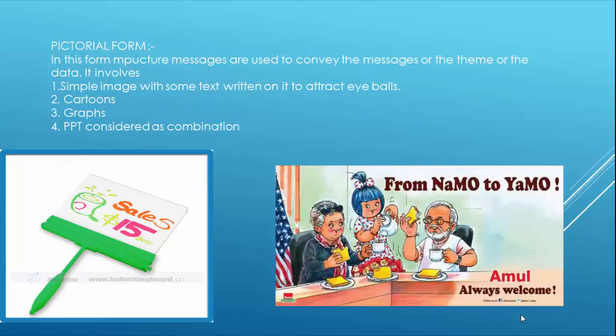Pictorial form — in this form, pictorial messages are used to convey the message, theme, or data. It involves: 1. Simple images with some text written on them to attract eyeballs, 2. Cartoons, 3. Graphs, 4. PDFs, considered as a combination.